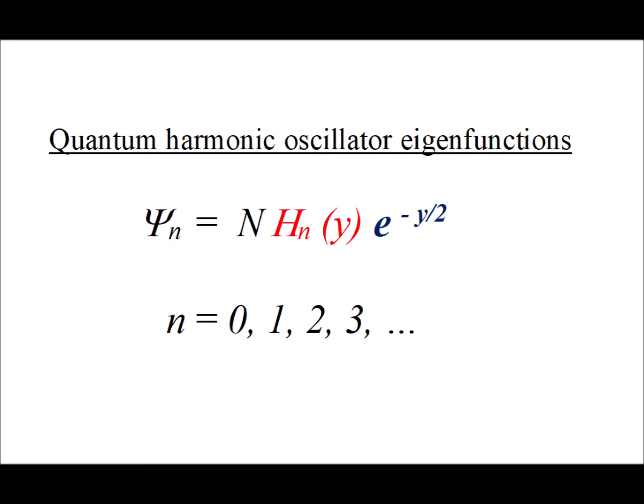Hello. In this video, we are going to show how to display some more graphs involving the quantum harmonic oscillator. In particular, we are going to demonstrate that the eigenfunctions for the quantum harmonic oscillator problem are orthogonal to each other if they have a different quantum number n.